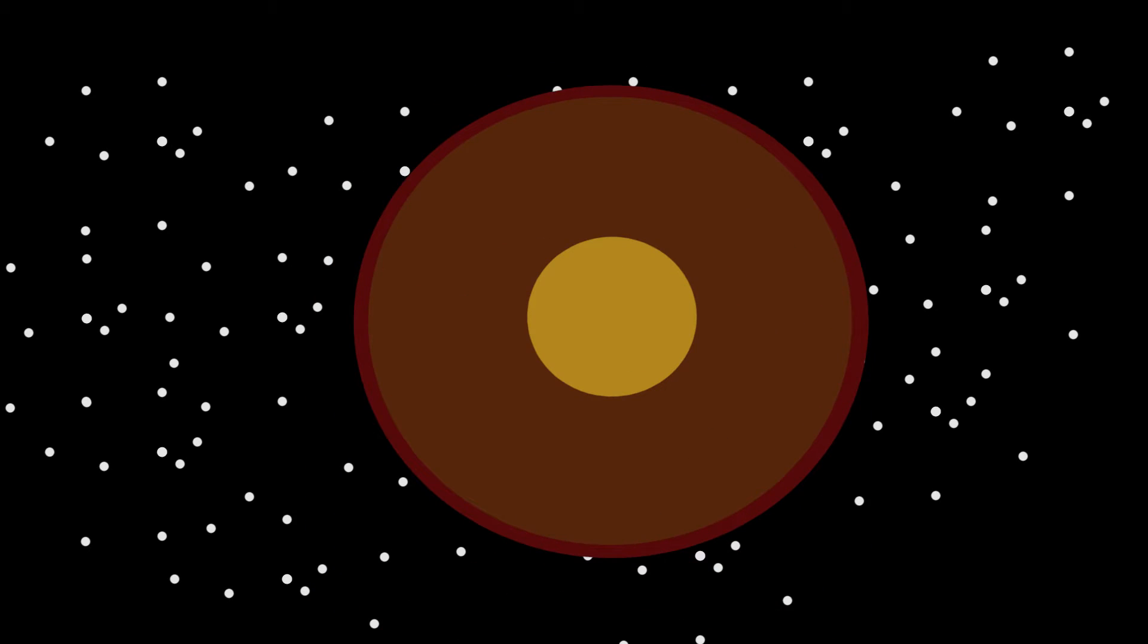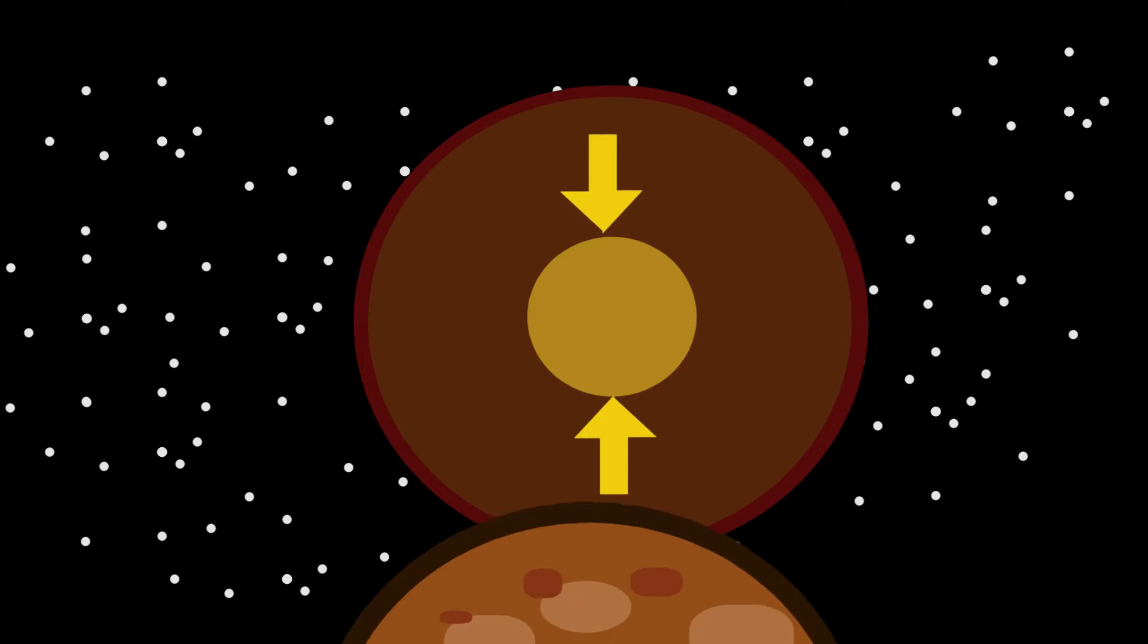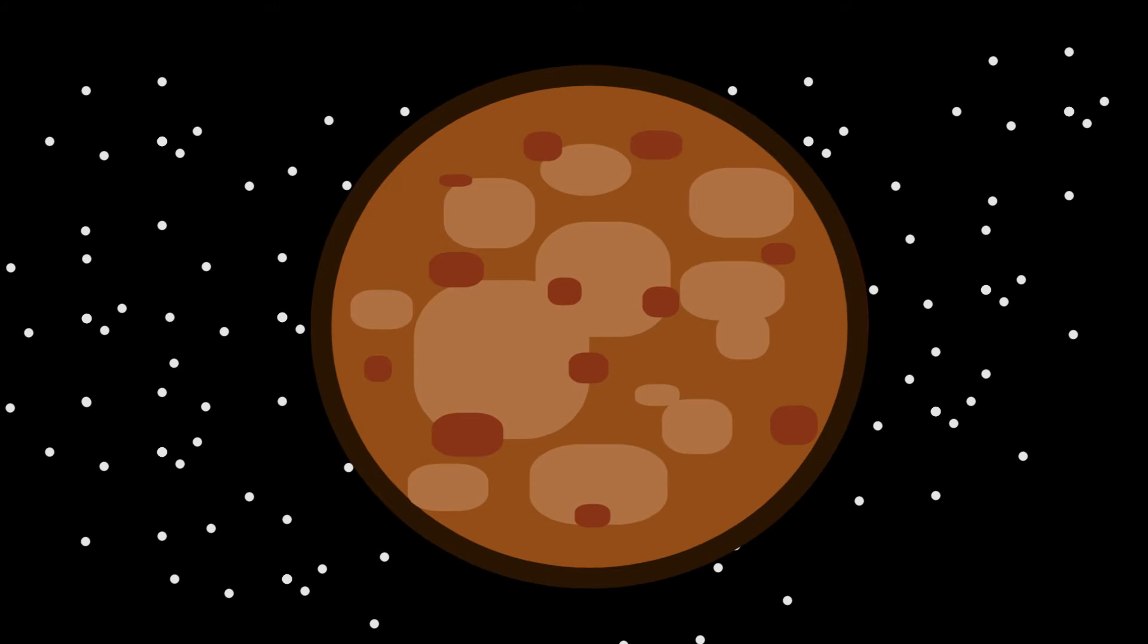Speaking of early Earth, we can talk about the core. The core was made from heavy metals, which sunk to the innermost core and created the metal core that we now know today.